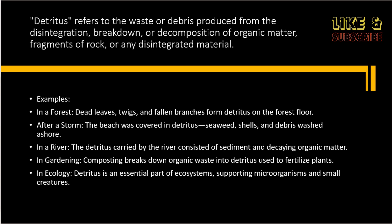In gardening, composting breaks down organic waste into detritus used to fertilize plants. In ecology, detritus is an essential part of the ecosystem, supporting microorganisms and small creatures. In ocean ecosystems, deep sea ecosystems thrive on detritus, sustaining diverse marine life. In urban areas, detritus accumulates from litter, contributing to pollution. In forensic science, analyzing detritus at a crime scene can provide crucial evidence for investigations.